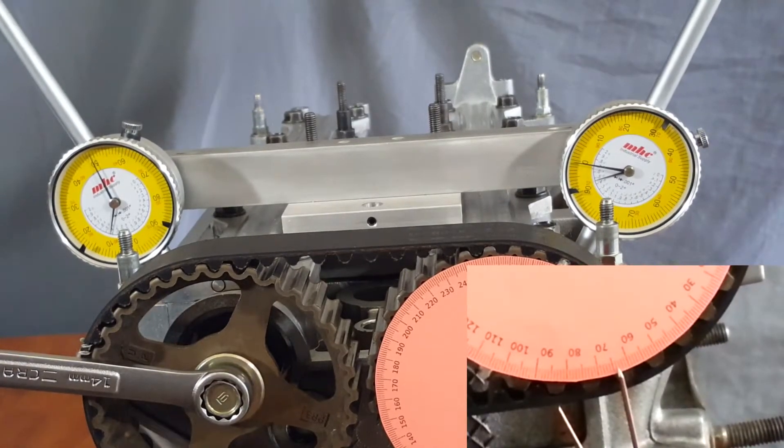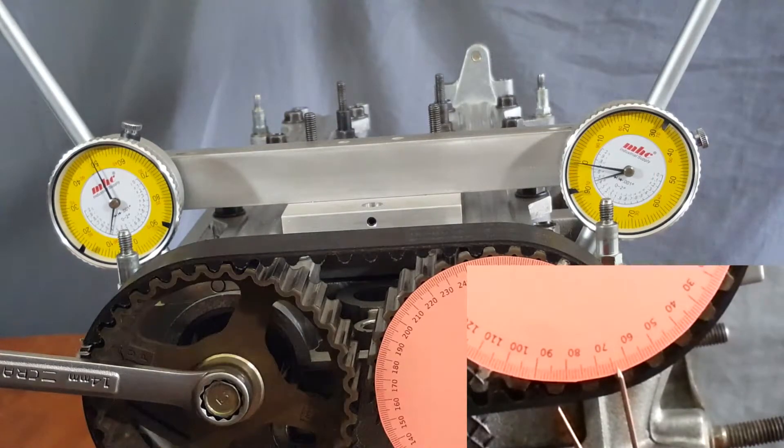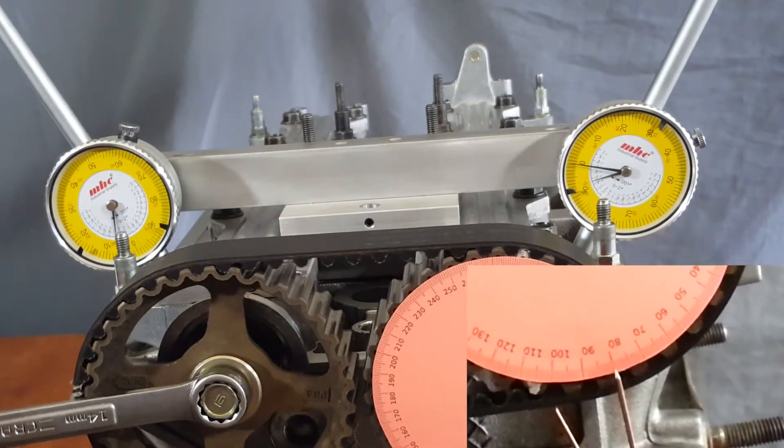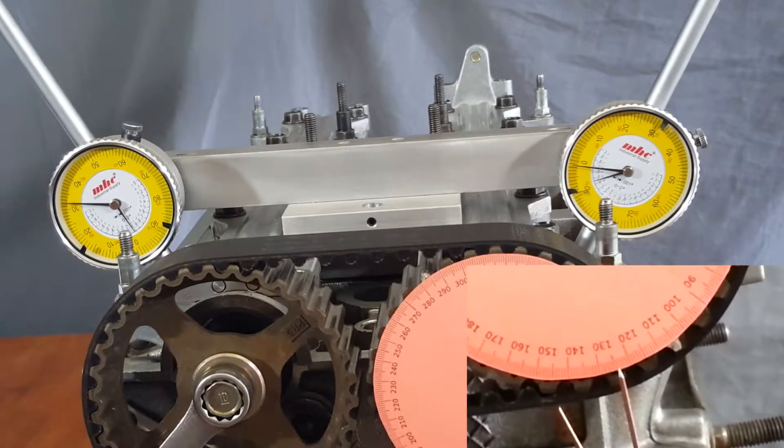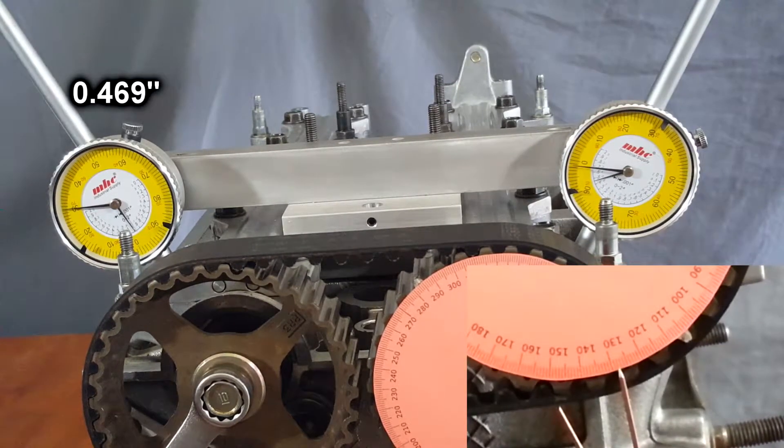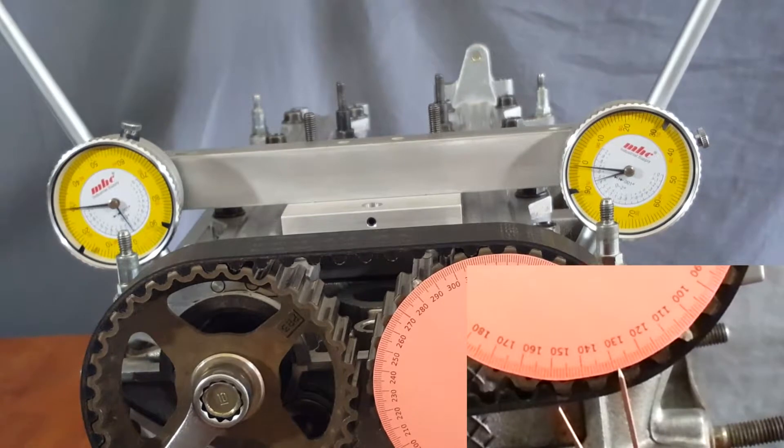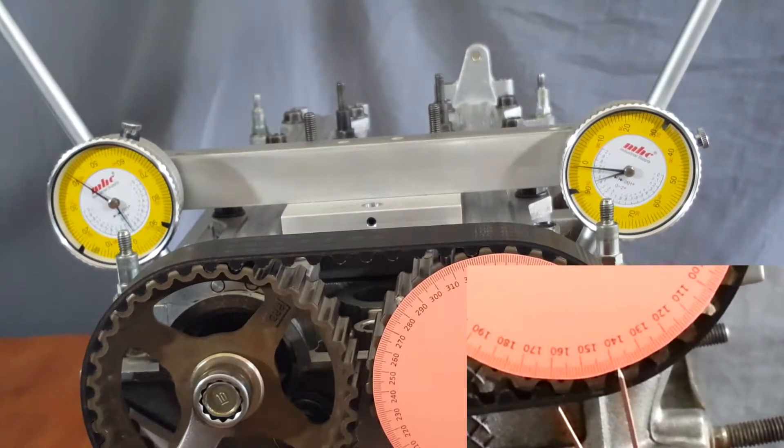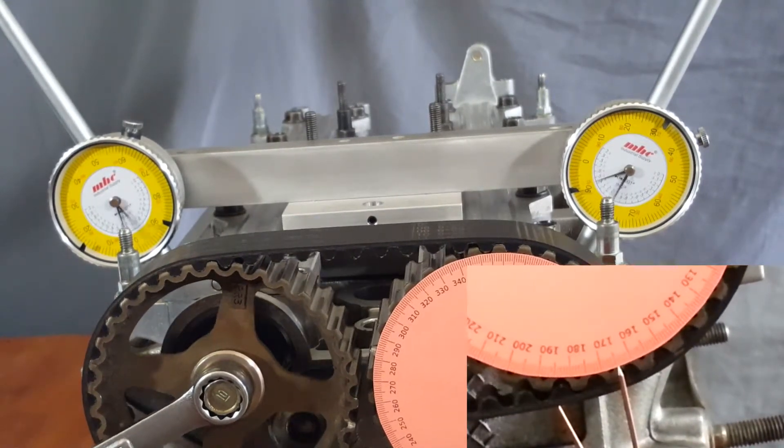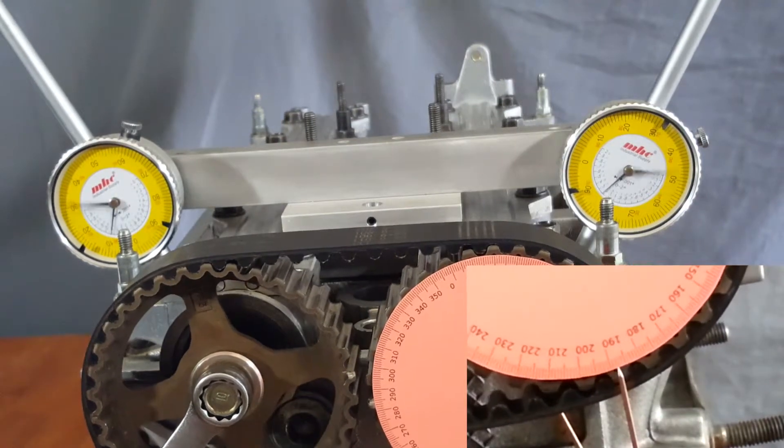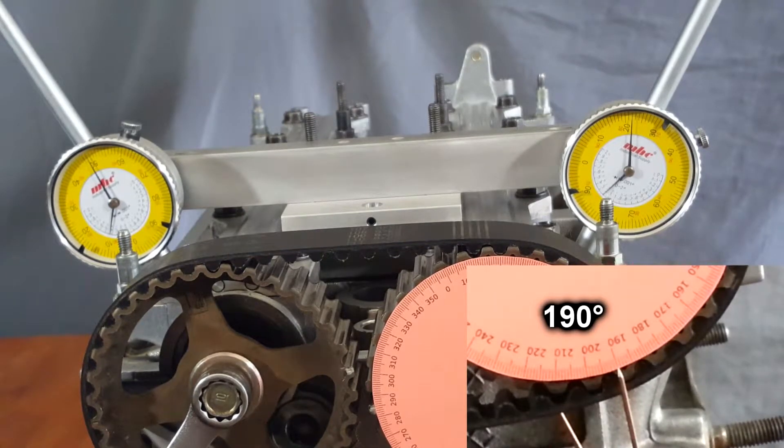Now we'll keep going until we reach peak lift, which should be about 468, 469. So we'll go: 100, 200, 300, 400, 469. So we'll write that down: 469 thousandths, 470, 469. And we'll go back until it closes and stop 50 thousandths before. Two, three, four—we'll stop here.